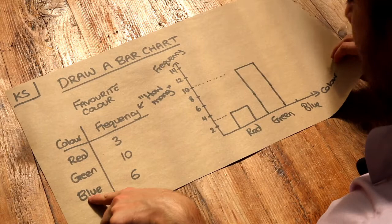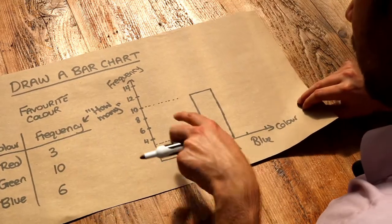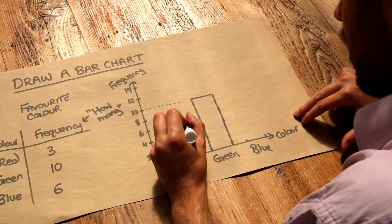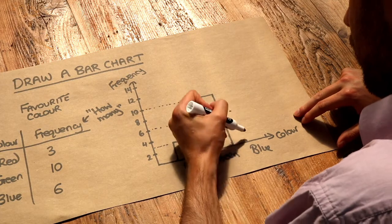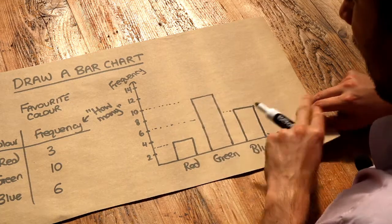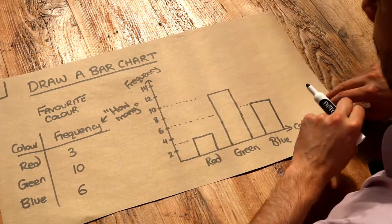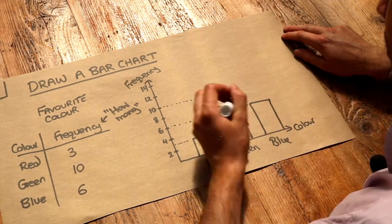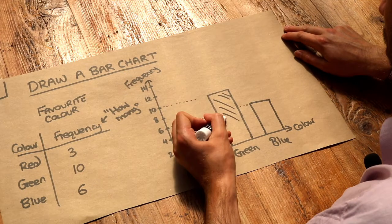And then finally, six people said they liked blue, so we need to go up to six, which is up to here. Again, our last rectangle, making sure that there's gaps between those different bars in our bar chart, and I'm just going to shade them.